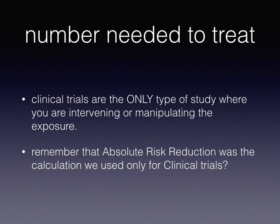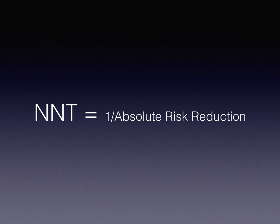So what if we could quantify, on average, how many patients we would need to treat to save an average of one person who would otherwise be harmed for not being treated? That's the number needed to treat, and we calculate it as 1 over the absolute risk reduction.